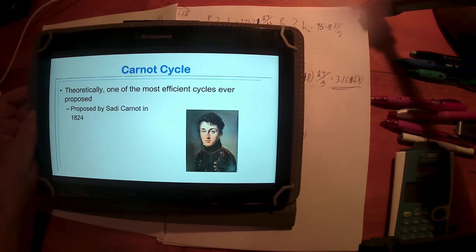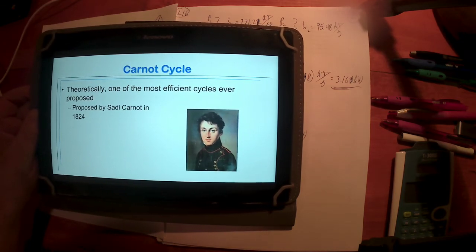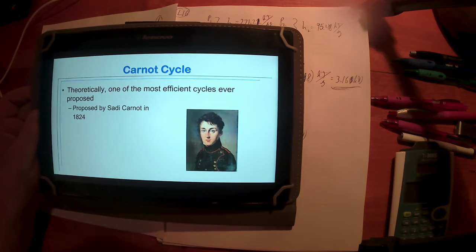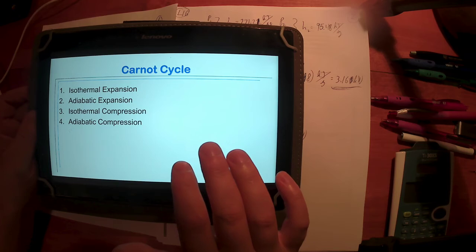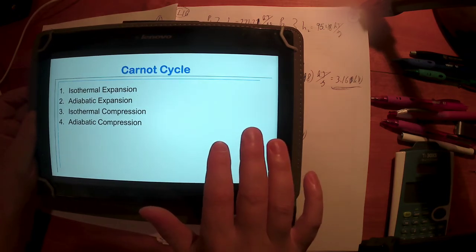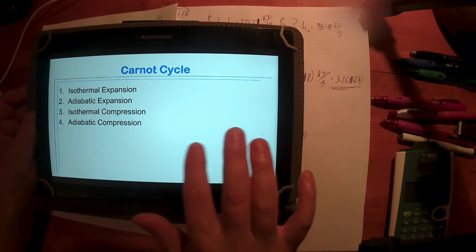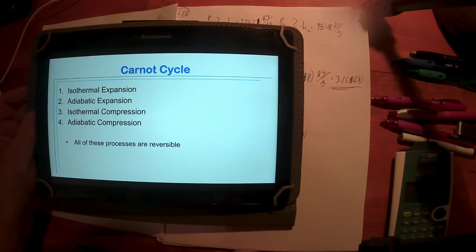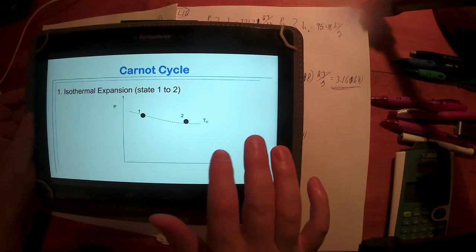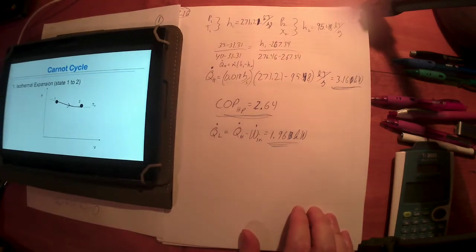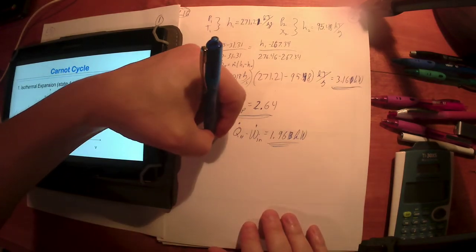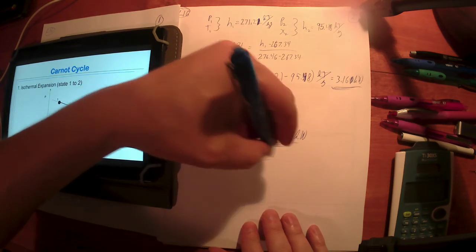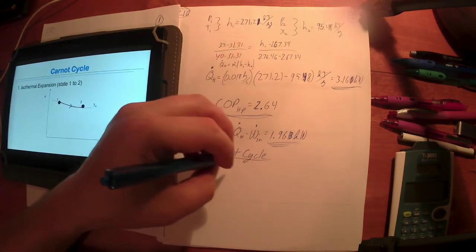Much like Kelvin-Planck and Clausius, he was trying to find the best way to get the most work he possibly could out of an engine, out of a steam engine or a heat engine, something like that. So what does he come up with? Well, he came up with this process. I'm going to draw this out with you. He proposes all these processes are reversible. Let's draw this out. You should be taking notes as we go along. Trick your brain into thinking this is important because it is important. Carnot cycle, step one: isothermal expansion.